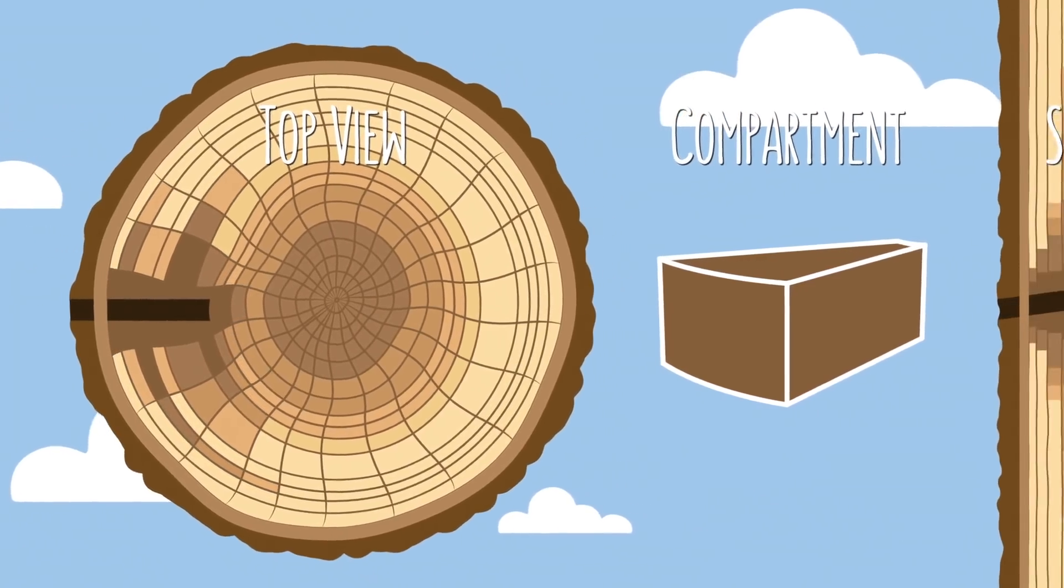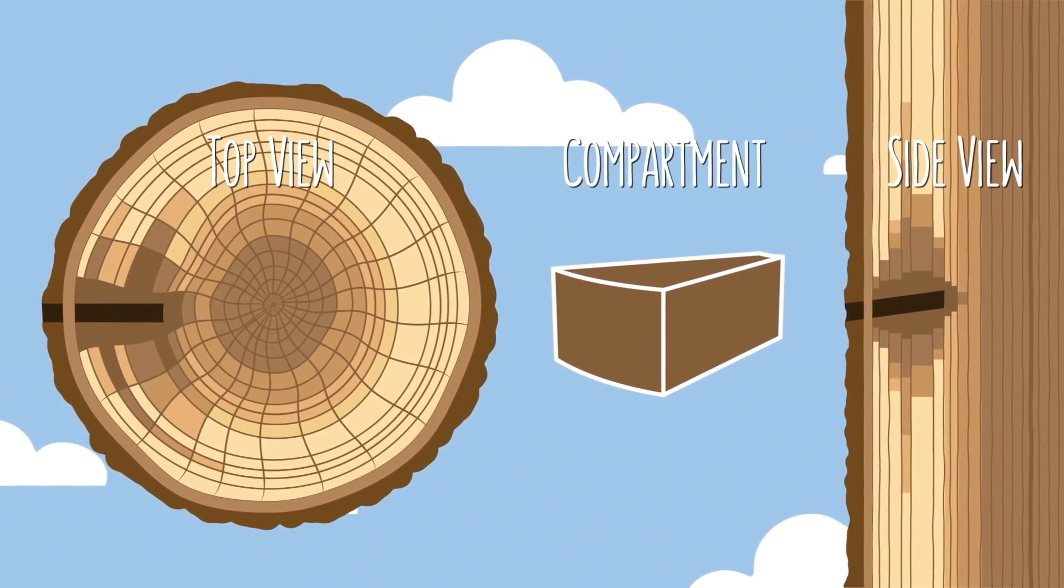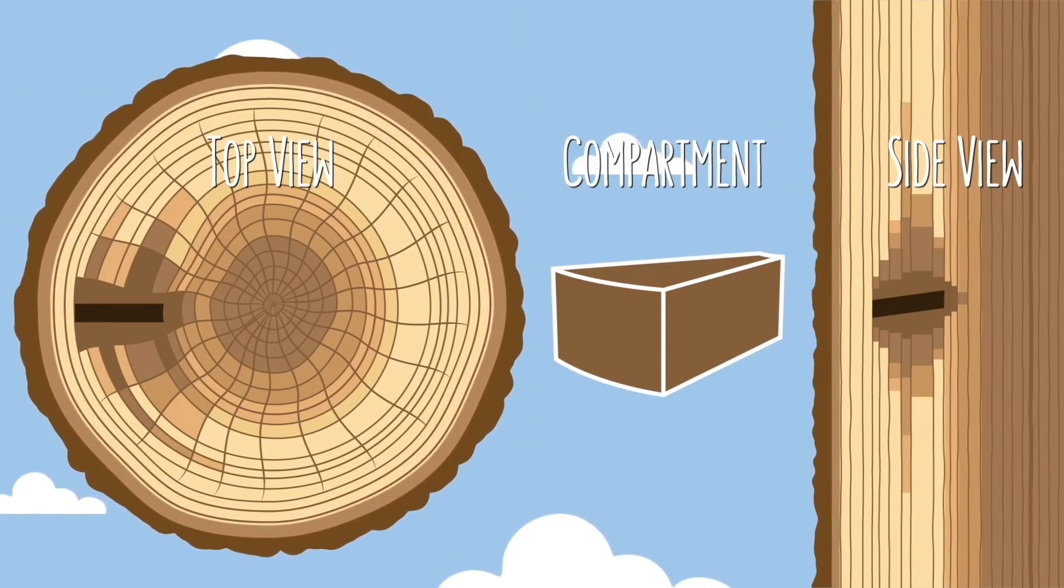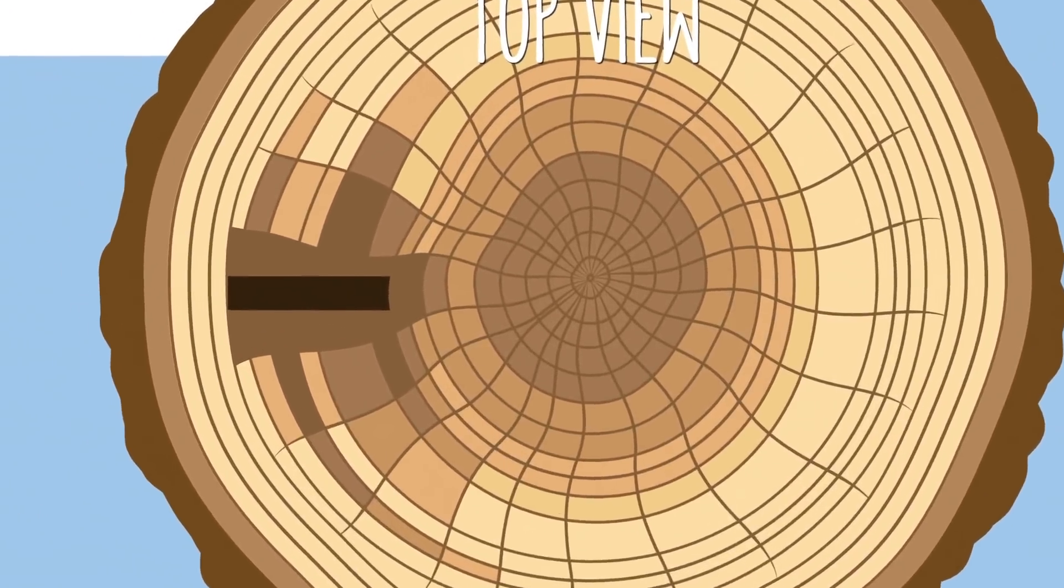But that's not the only lasting reminder of maple syrup production. Because again, the tree can't fill in the tap hole. It can only ever cover it up. Eventually, the new growth rings will add plenty of strength to the tree. And after a few years, it'll hardly even be noticed. But inside the trunk, that cavity will still remain. Forever.